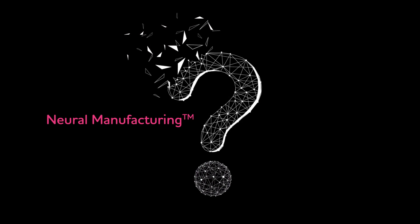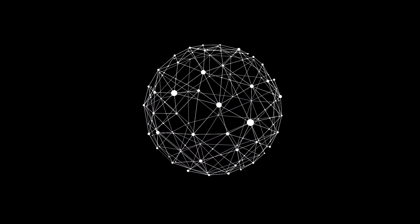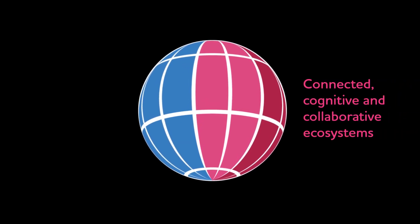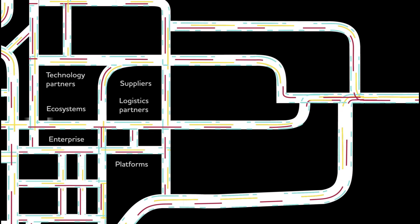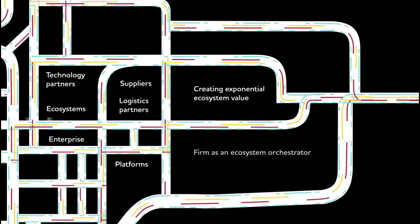How can TCS Neural Manufacturing help? With Neural Manufacturing, we can help you adapt to the future by orchestrating connected, cognitive, and collaborative ecosystems with unparalleled agility, and building value chains with an intelligent edge.